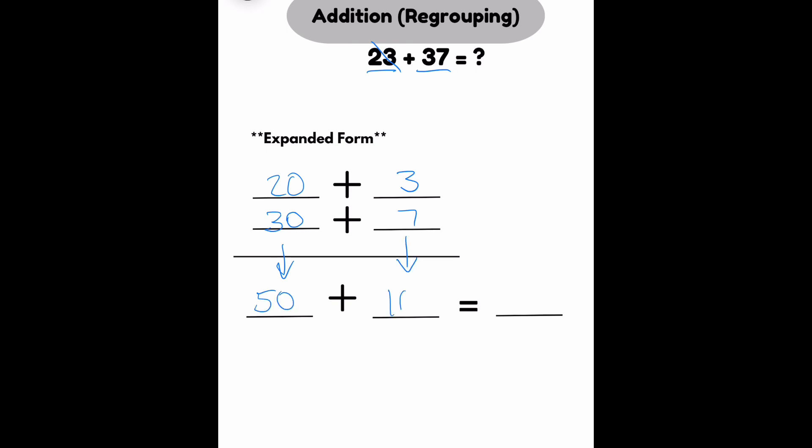50. 10. If I show this in base 10 blocks, I have 5 tens on the left and 1 ten on the right. I don't have any 1s, so 5 tens plus 1 ten makes 6 tens, which is 60.